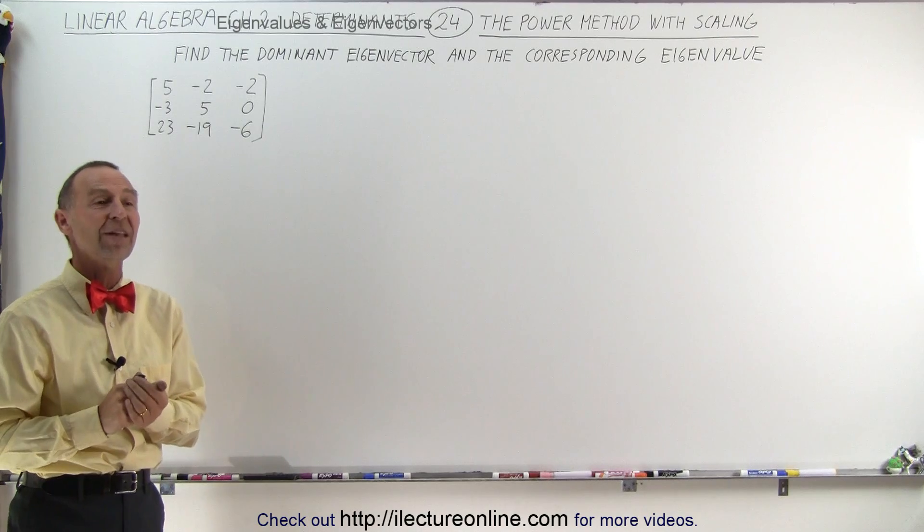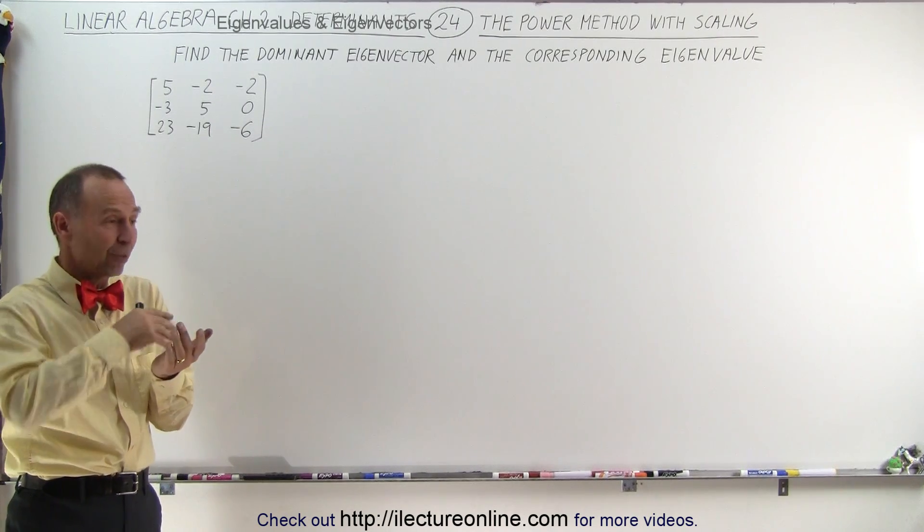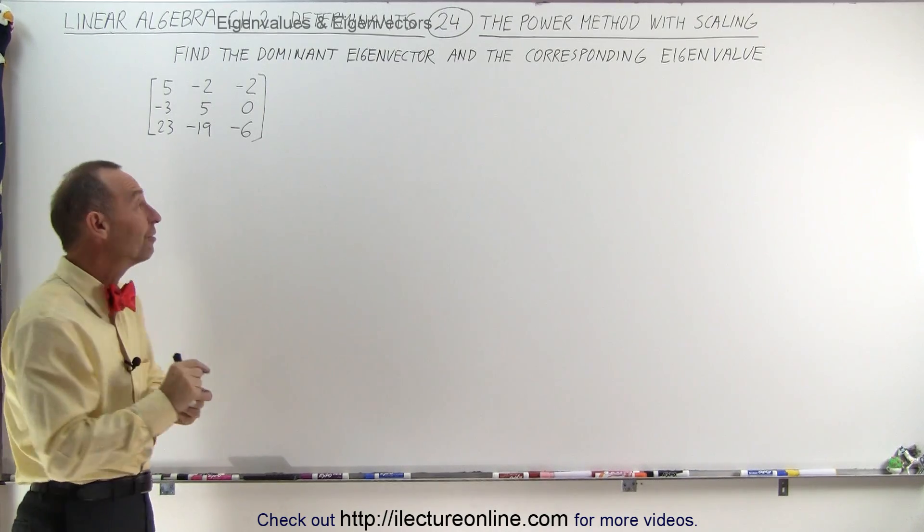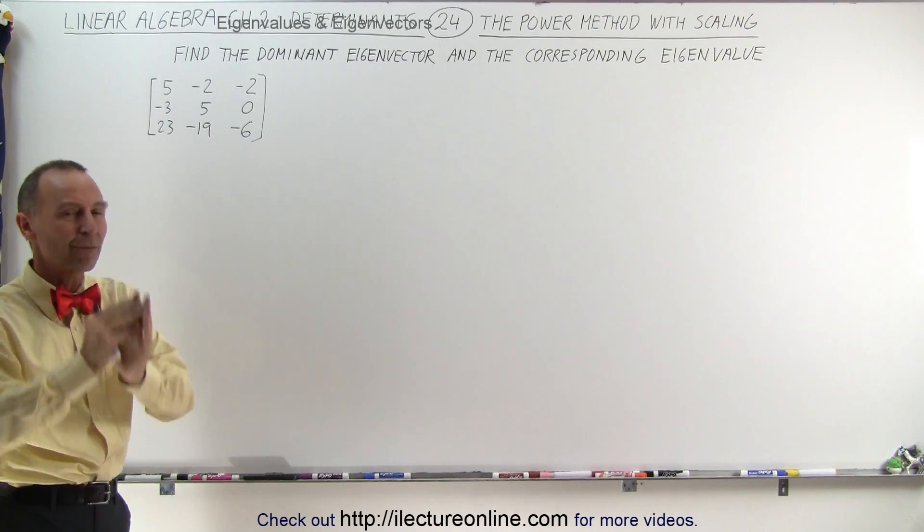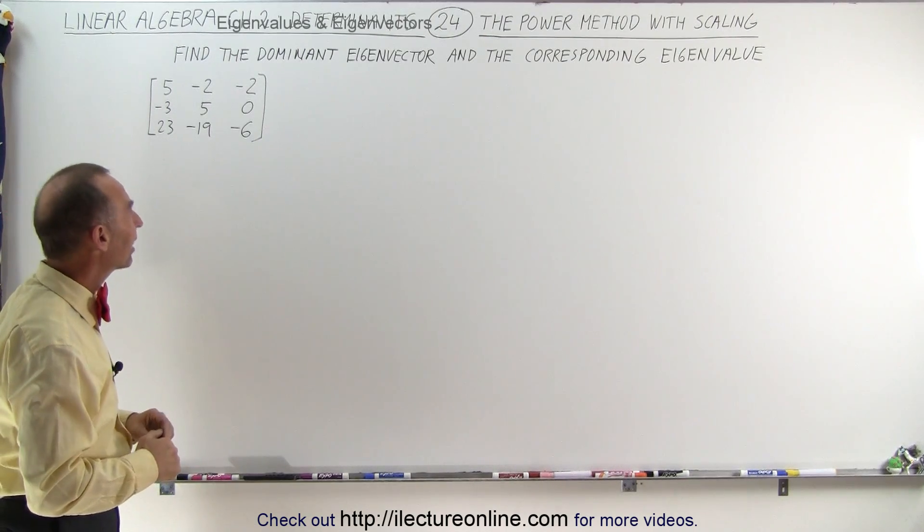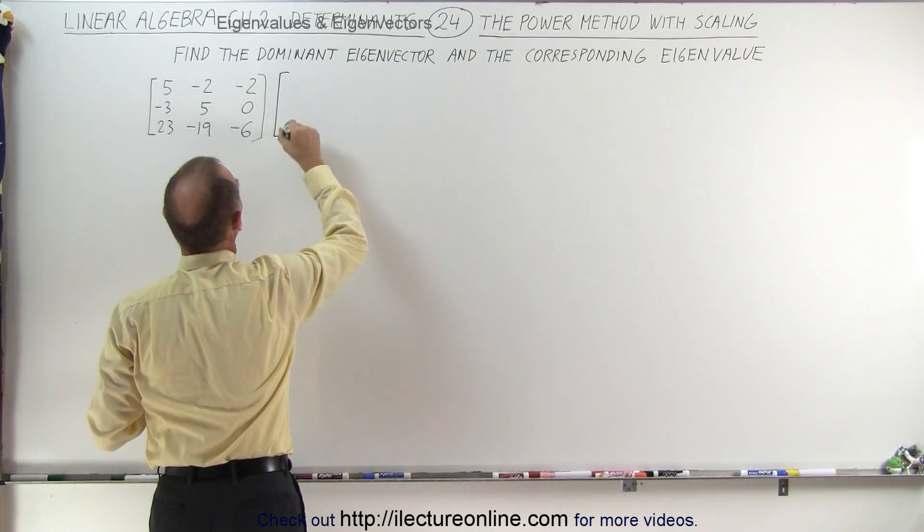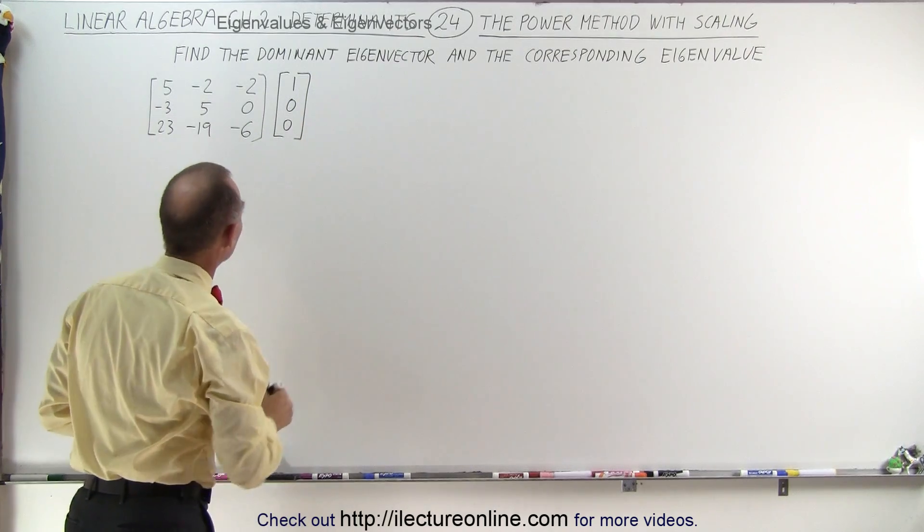Also this will give us an example where sometimes at first it doesn't appear to be converging. Sometimes the signs will toggle. When we stick with it long enough we can actually make it work and we can actually get to the point where it appears to be converging. Let's start with the attempt at eigenvector of 1, 0, 0 and see where that leads us.